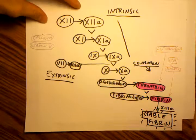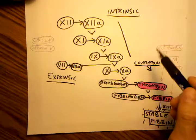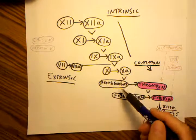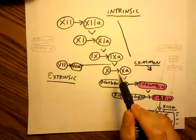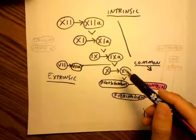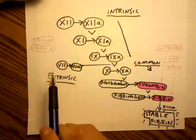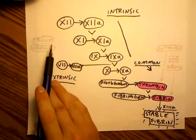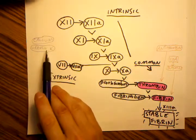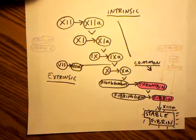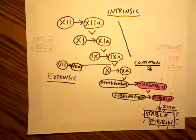A couple other things. A lot of these factors, I didn't really draw it, but you know thrombin, 10a, 7a, in order to become activated and in many cases to produce the inactive forms usually in the liver, we need a couple other things. Most of them need calcium in order to be activated.